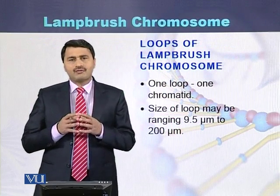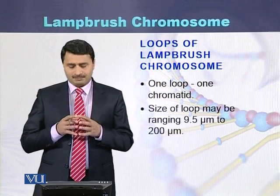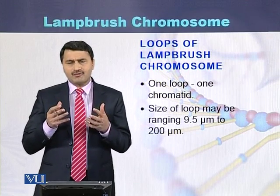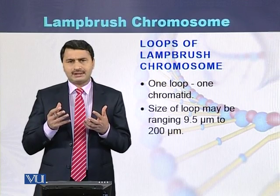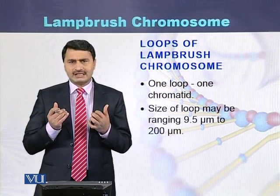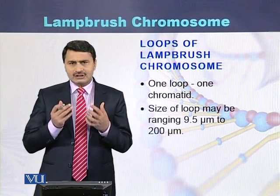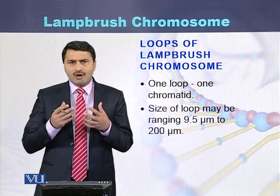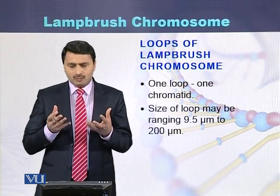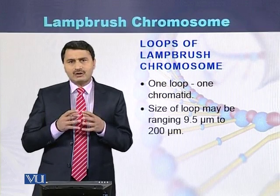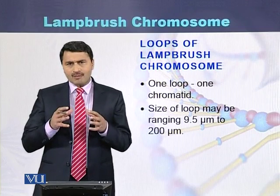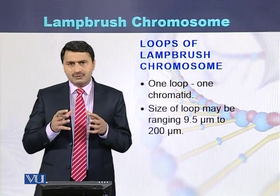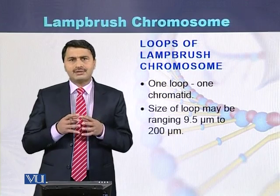Loops of the lamp brush chromosome: one loop consists of one chromatid, or in other words, each chromatid is in the form of a loop. The size of the loop can vary from 9.5 microns up to 200 microns.